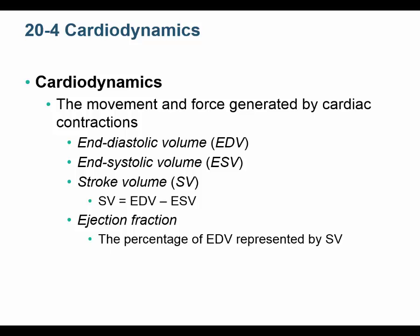We've already been using some of these words, but let's make sure we understand. The amount of blood left in the heart before it contracts — meaning after it's done resting and filling — is called the end diastolic volume.